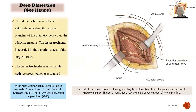Deep dissection continued: the adductor brevis is retracted anteriorly, revealing the posterior branches of the obturator nerve over the adductor magnus. The lesser trochanter is revealed in the superior aspect of the surgical field and is now visible.